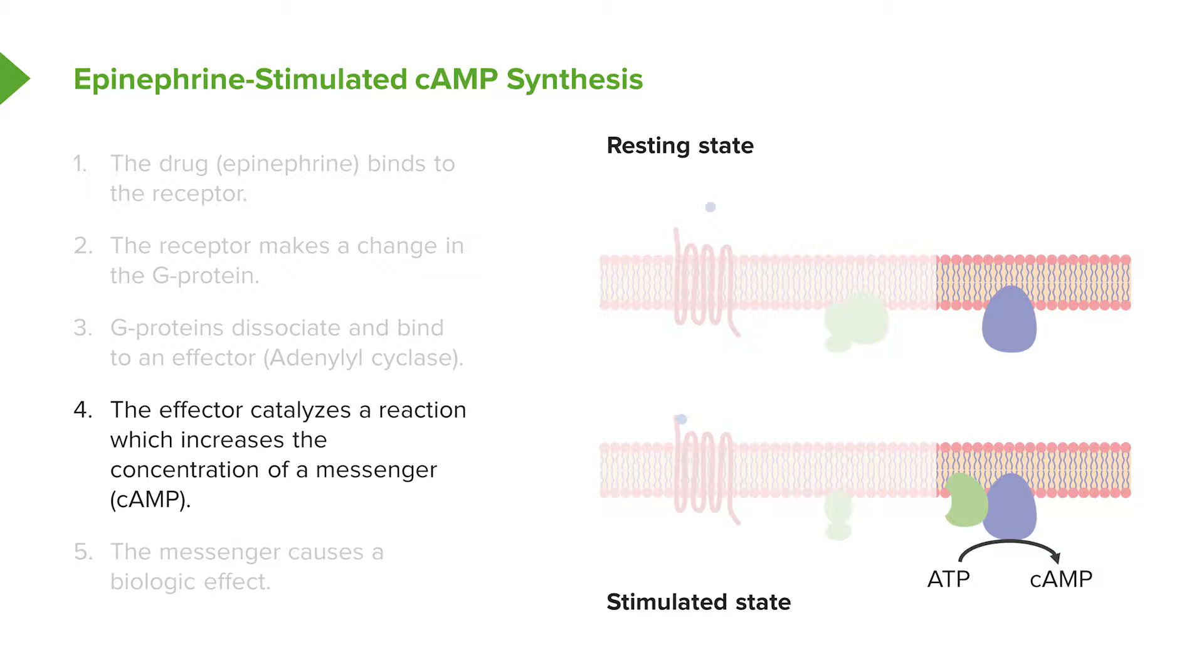The effector catalyzes a reaction which increases the concentration of cyclic AMP. Cyclic AMP is the most common second messenger out there, and we call cyclic AMP a second messenger because it is now the second molecule that's going out to do something, the first being the drug.